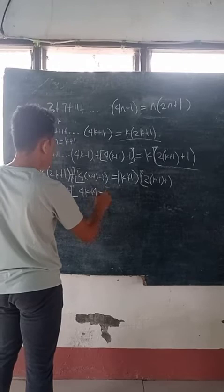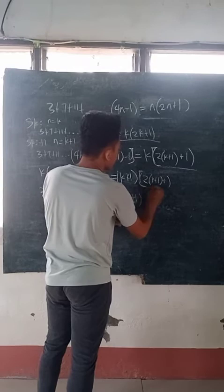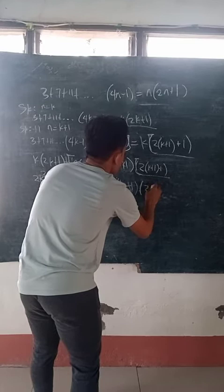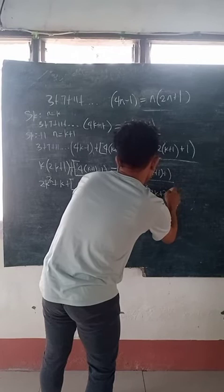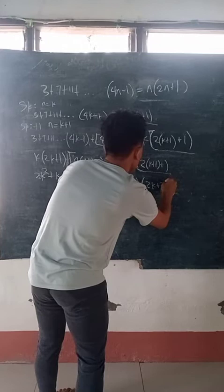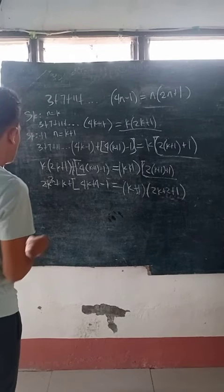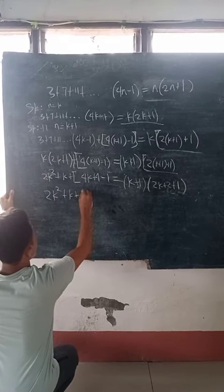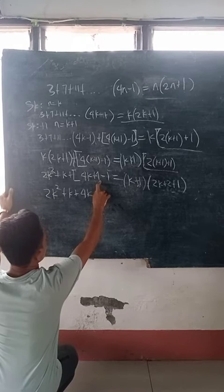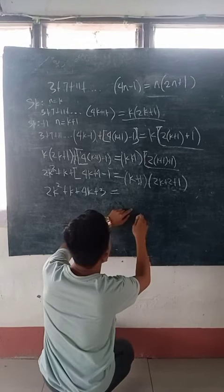So it will be 2k squared plus k plus 4k plus 4 minus 1. Adding the constants: 4 minus 1 is 3. So we have 2k squared plus k plus 4k plus 3, which equals 2k squared plus 5k plus 3.